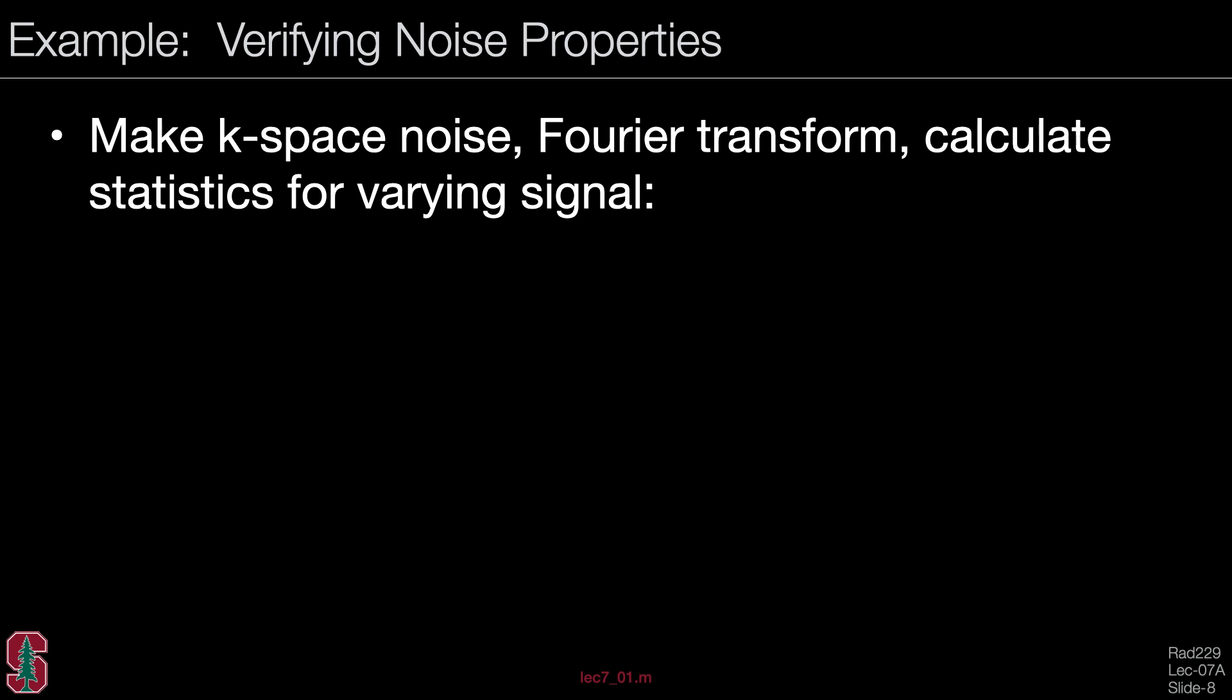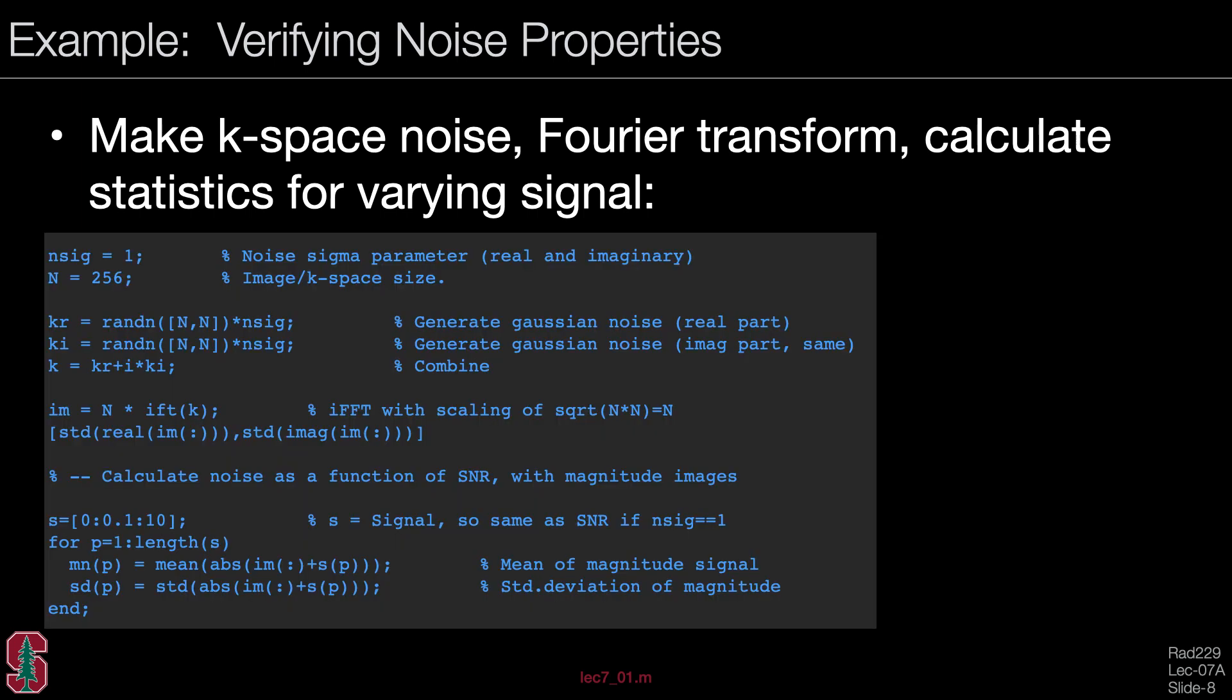Let's look at an example to verify the noise properties. We will make up some k-space noise that is complex Gaussian noise, take a Fourier transform, and calculate statistics. Here is the MATLAB code. The sigma is one, the number of points is 256. We generate real-valued and imaginary noise that is 256 by 256, add these up in k-space, take the Fourier transform to form image space, and we've scaled this by n instead of square root n.